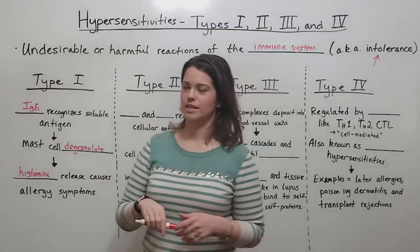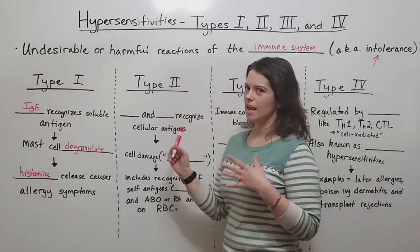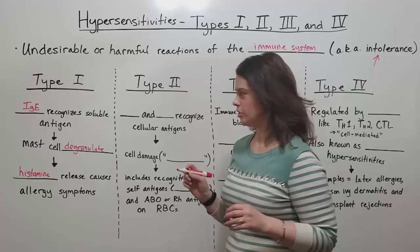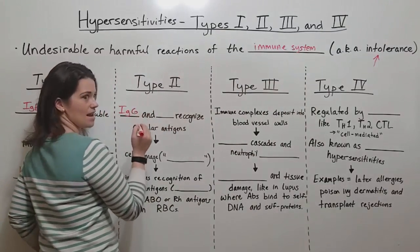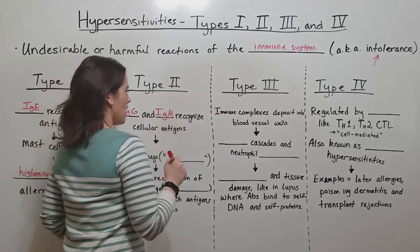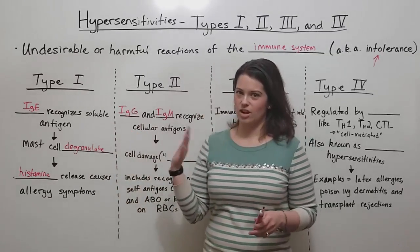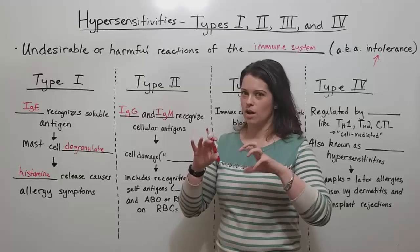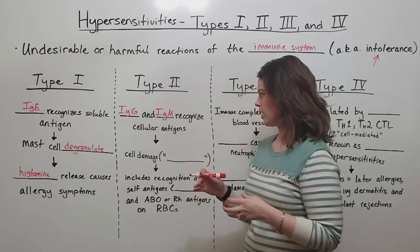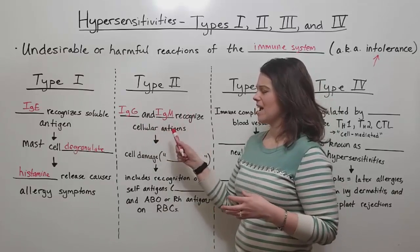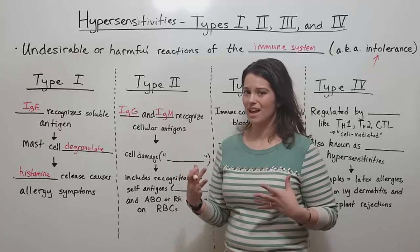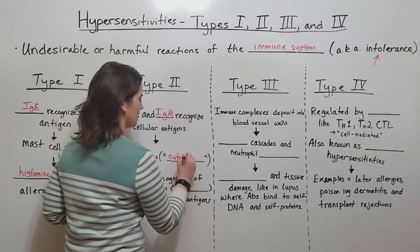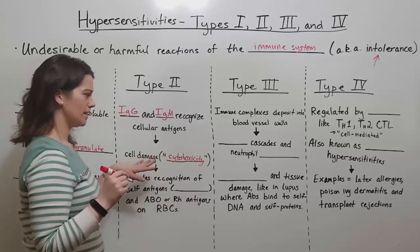That is type 1 hypersensitivities. Now let's talk about type 2. Type 2 is also mediated by antibodies, but by different kinds — rather than IgE, the antibodies in type 2 hypersensitivities are IgG and IgM. They recognize cellular antigens — antigens that are actually on the surface of the host's cells — rather than soluble antigens floating through the body. When these antibodies bind to cellular antigens, they cause damage to those cells, which can be termed cytotoxicity.